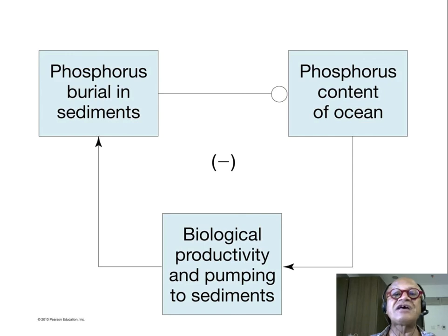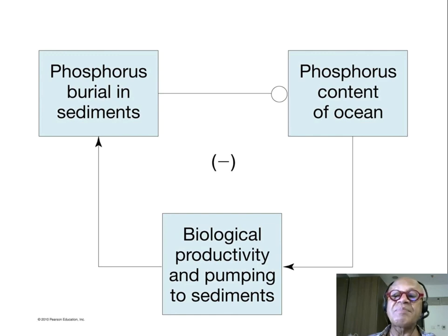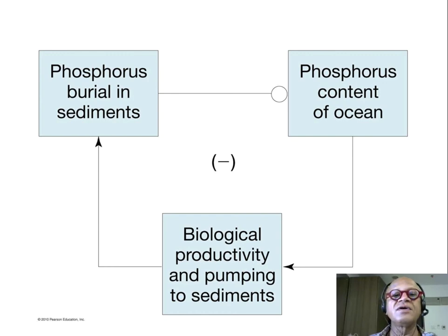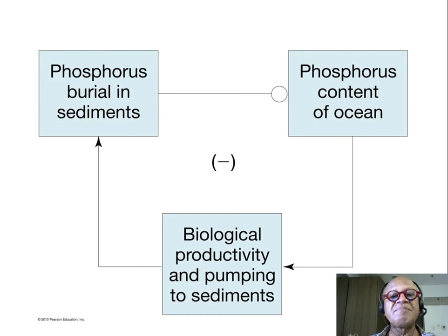So there is a stabilizing loop — positive, positive, negative — multiply the couplings and you get a net negative feedback. Phosphorus actually turns out to be a very critical nutrient and the most important nutrient that limits photosynthesis in the end.